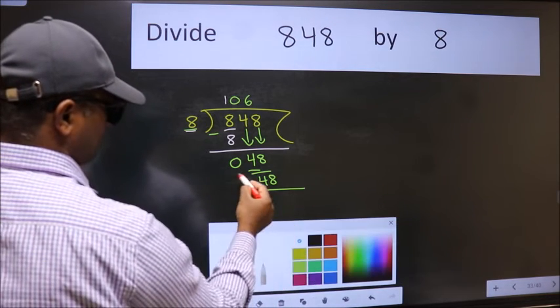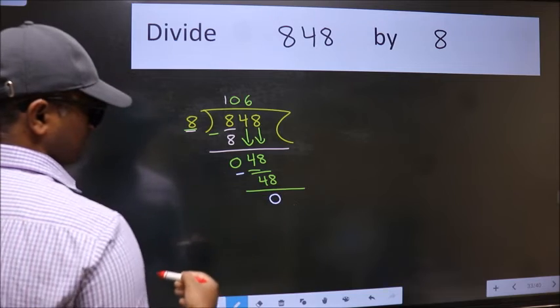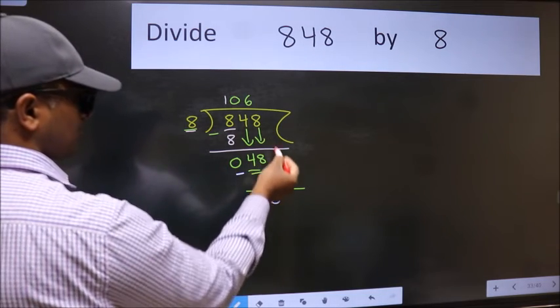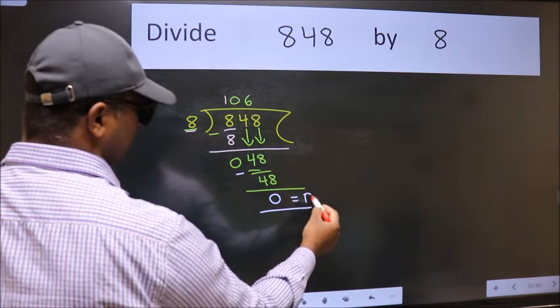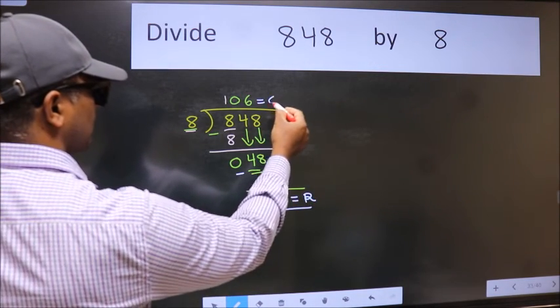Now we subtract. We get 0. No more numbers to bring it down, so we stop here. This is our remainder and this is our quotient.